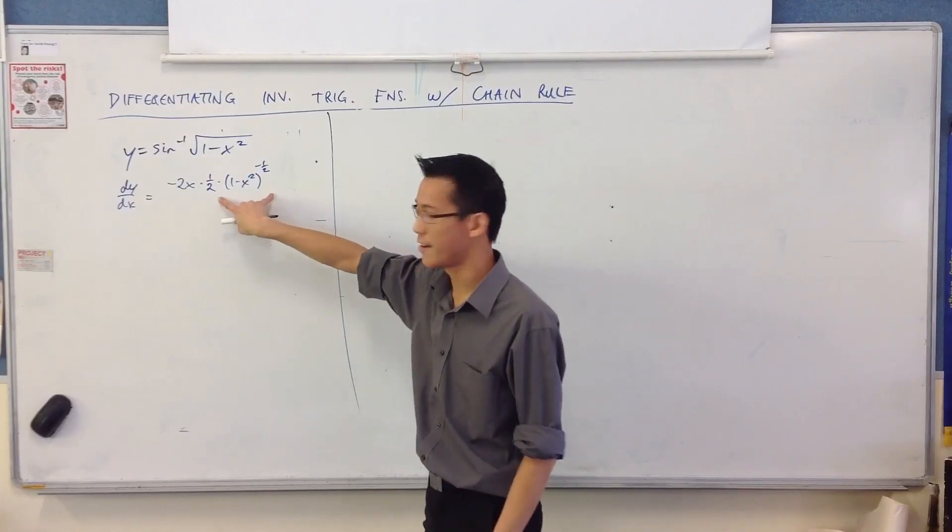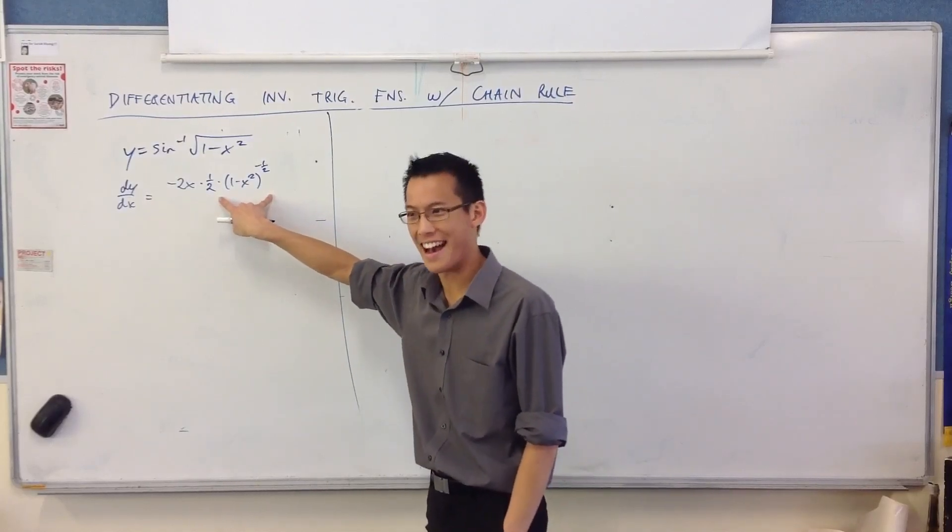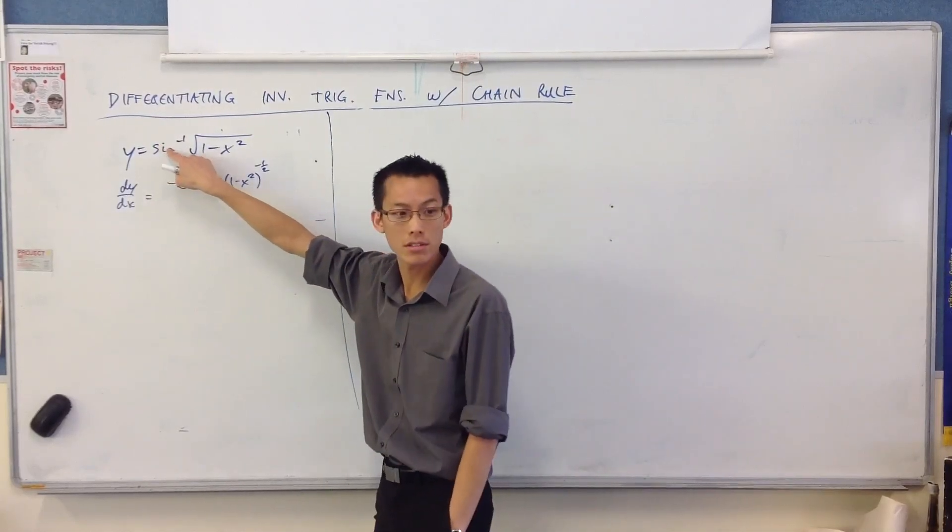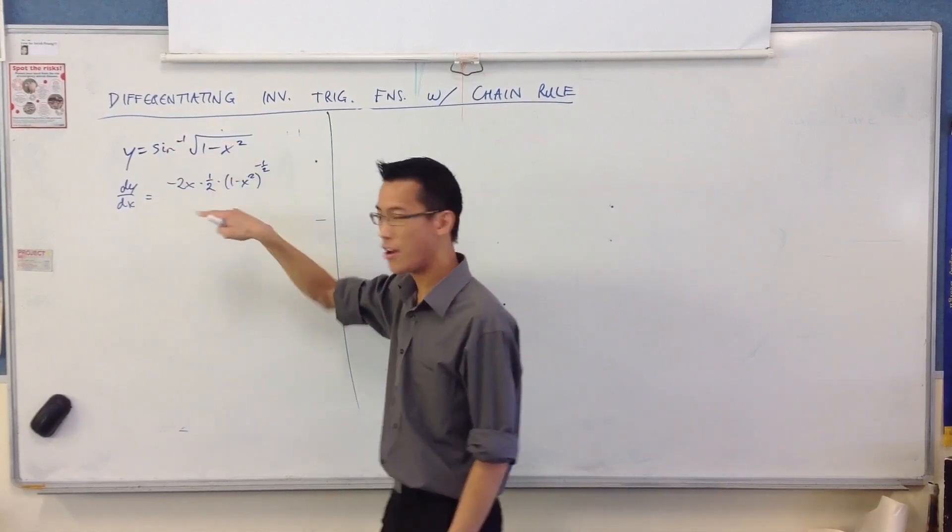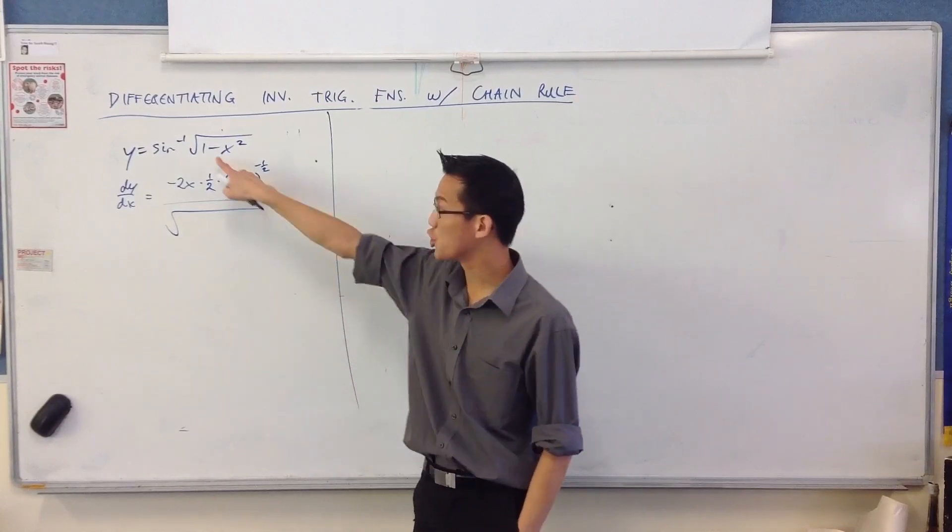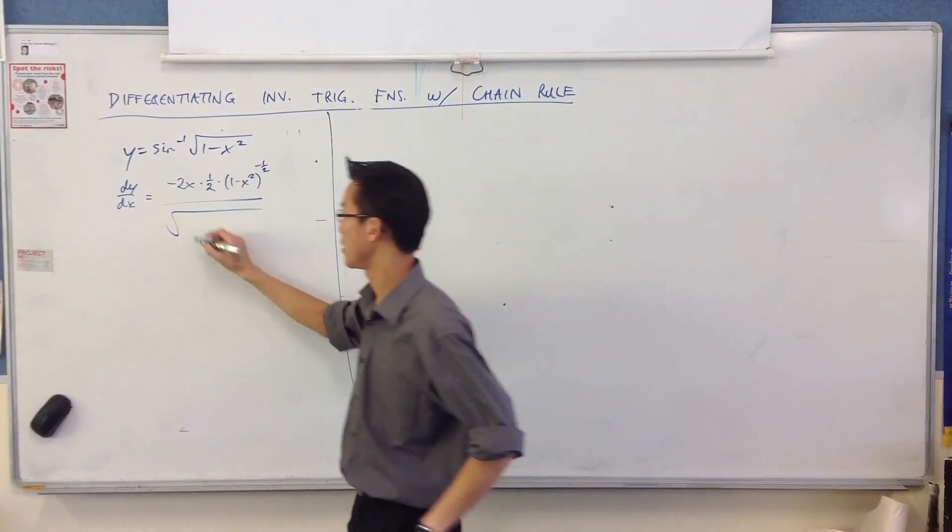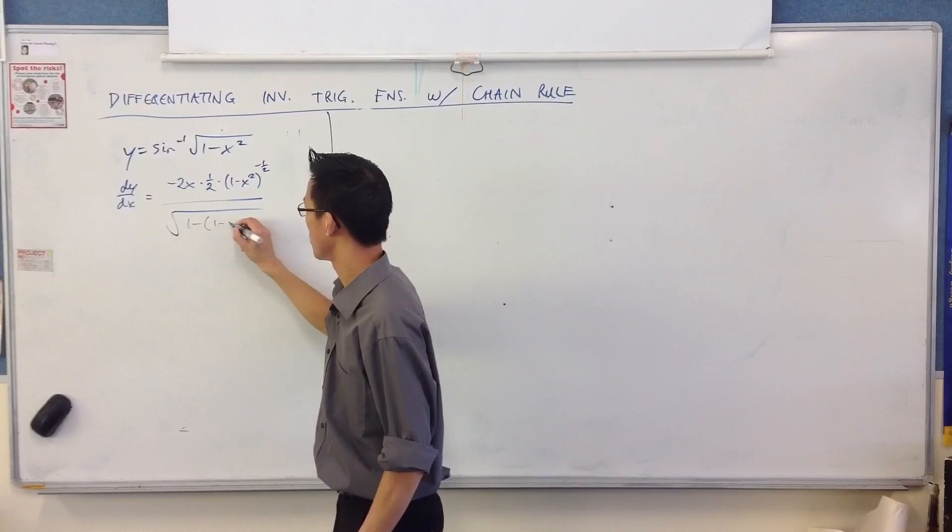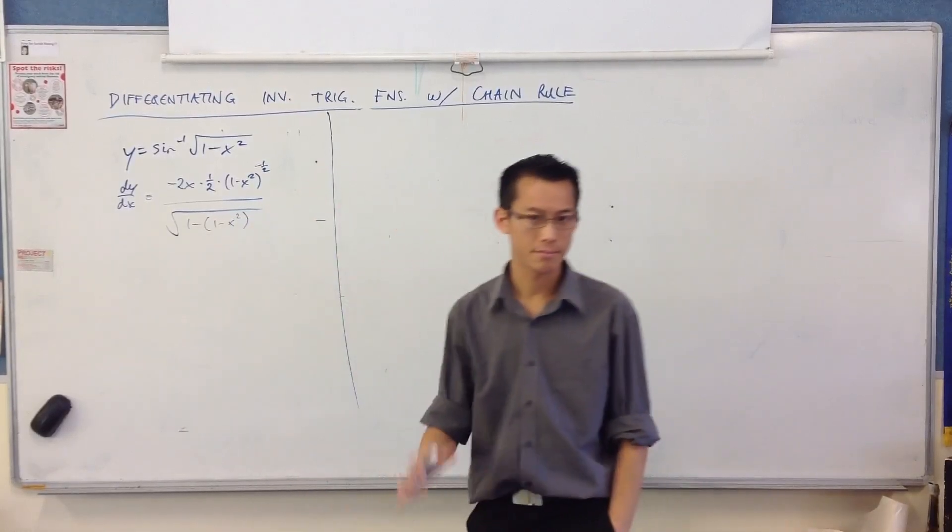I've done the inside. There's the outside. Now I'll do the outside outside, which is sine inverse. Okay, so that should be 1 over the square root of 1 minus u squared. Okay, no problems.